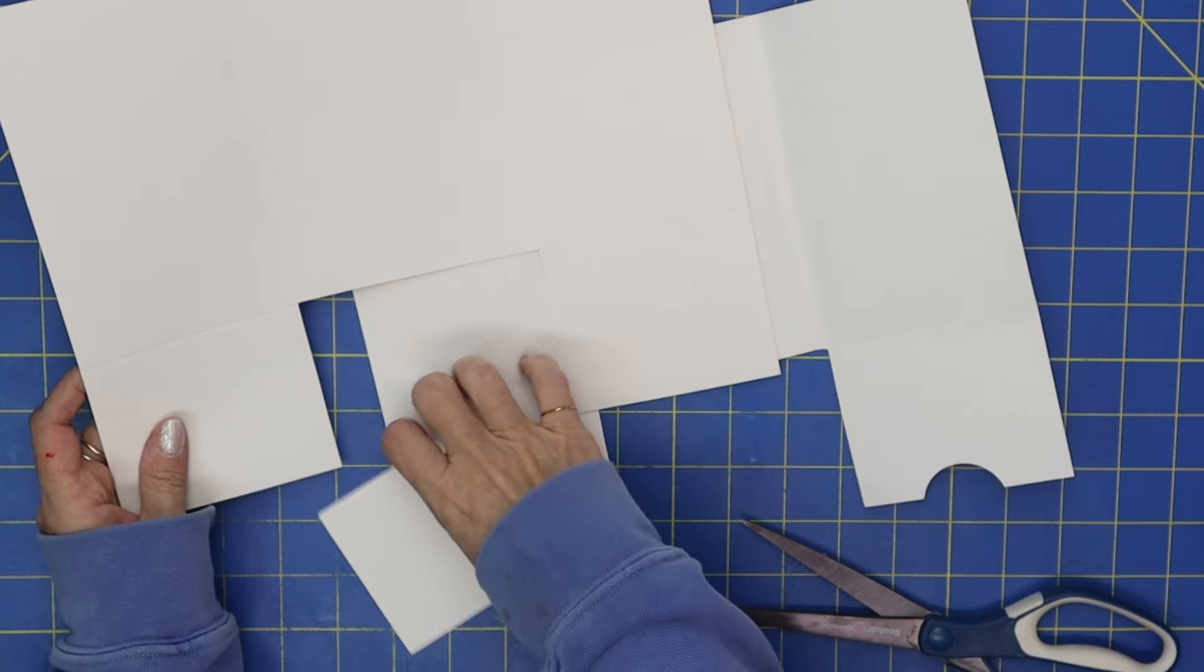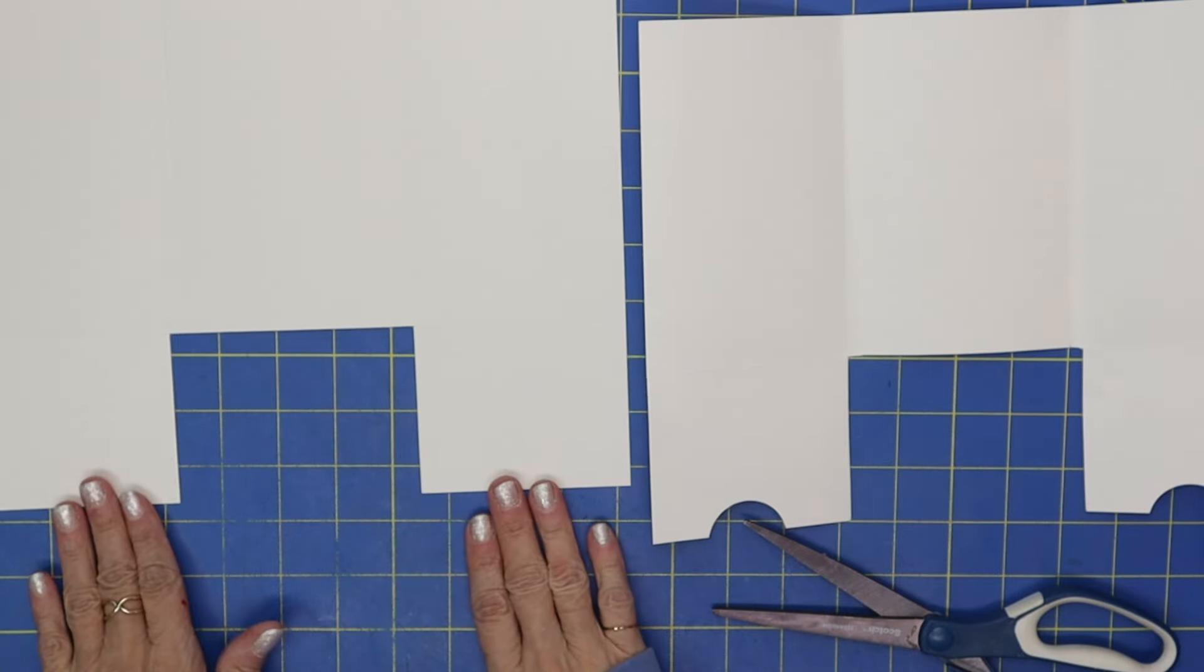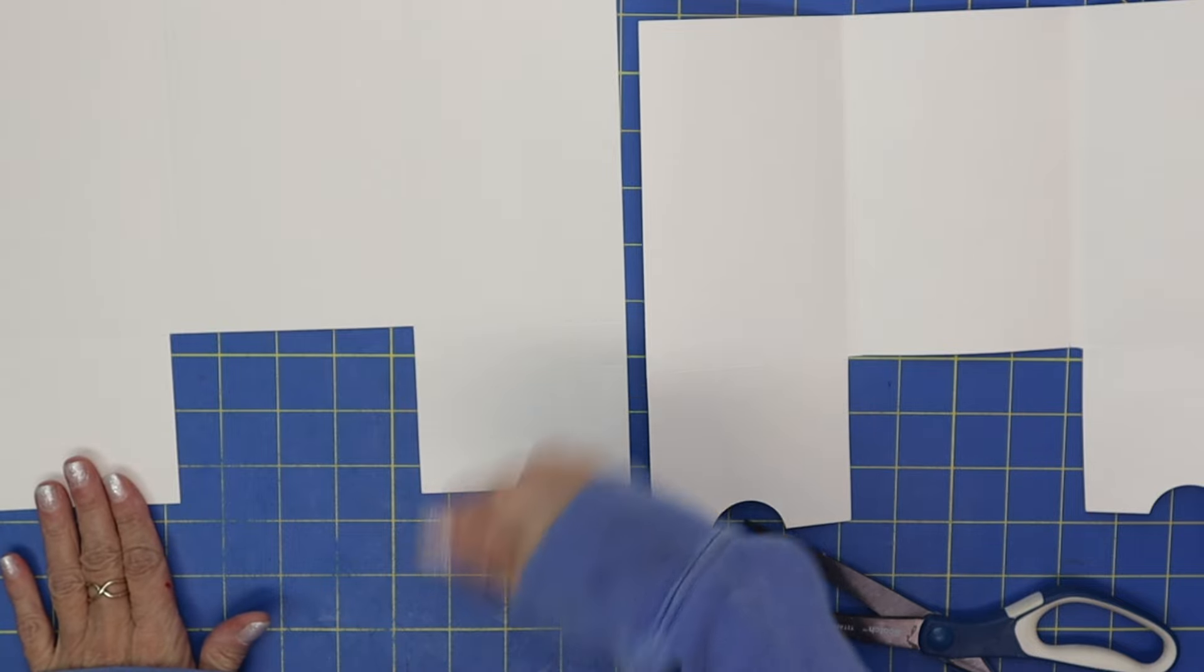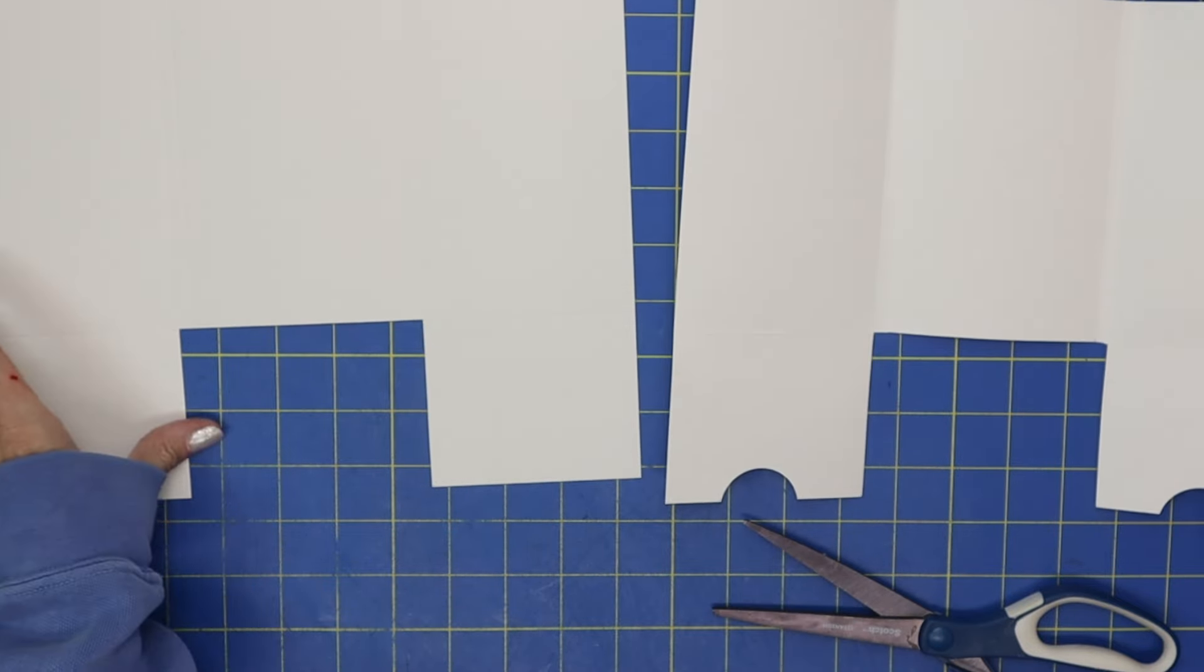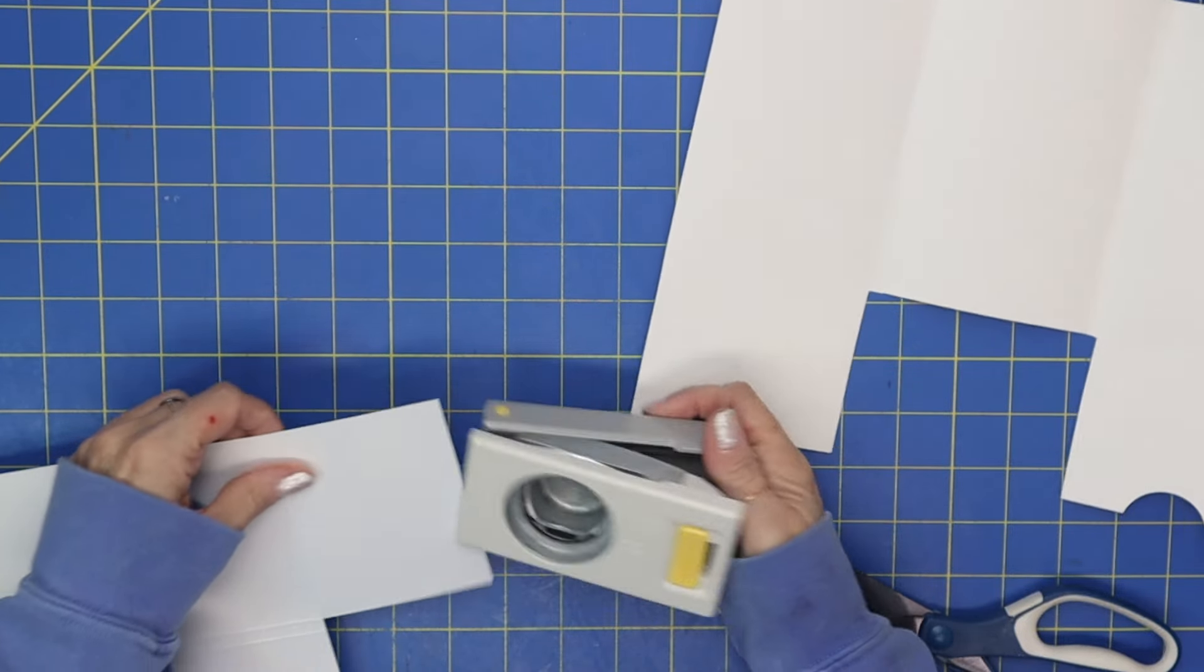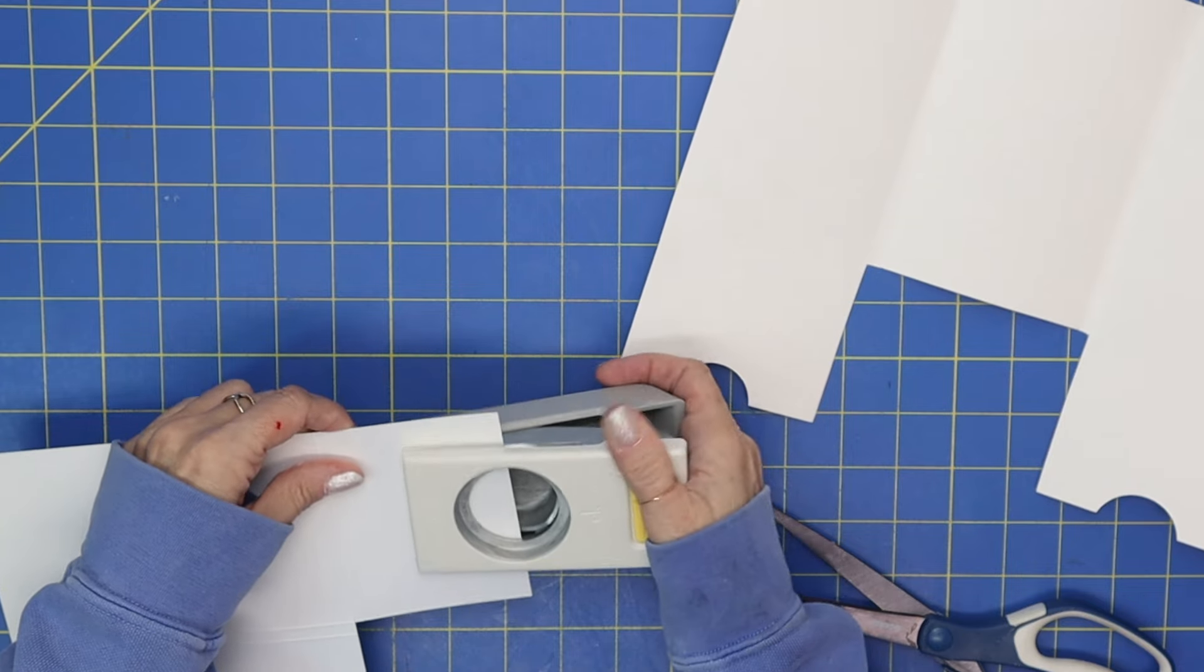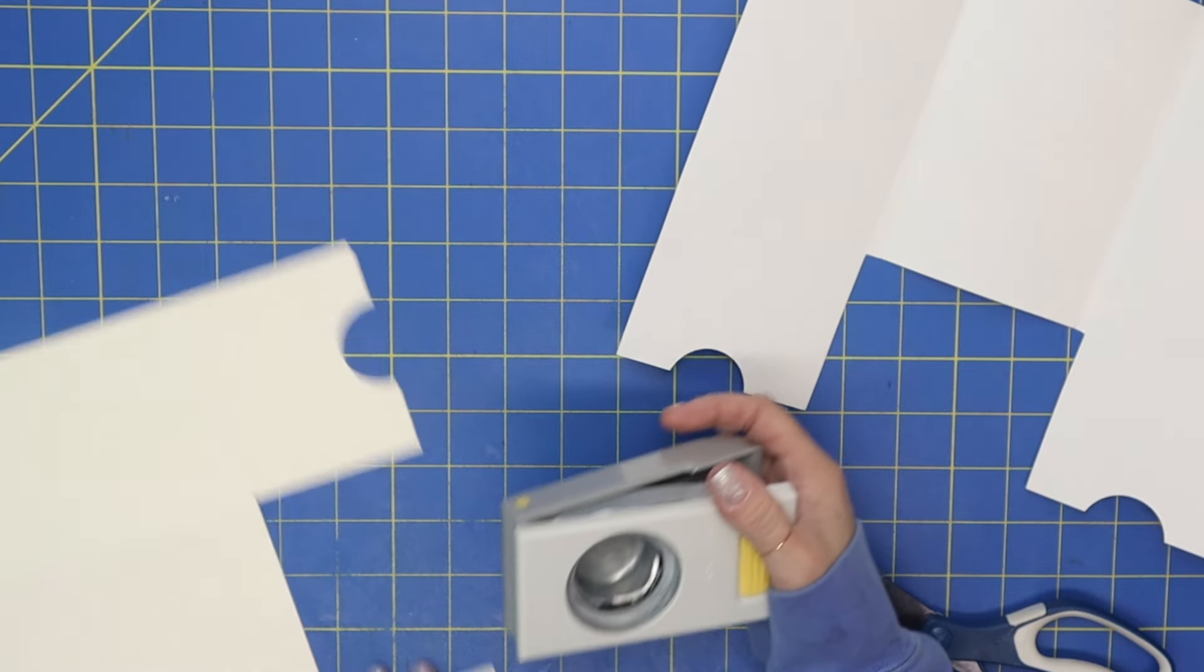Okay, so we've cut it out. So there is what we have. We're just going to round our corners—this is going to be our pocket pull. So let me bring in just a circle punch here.